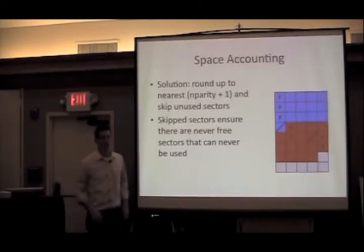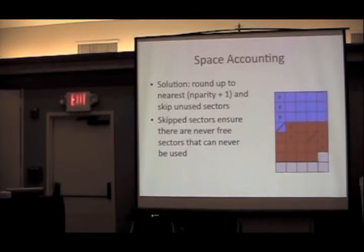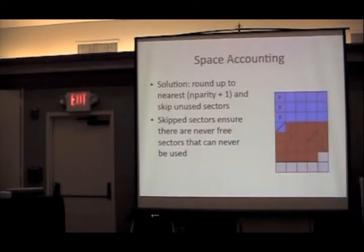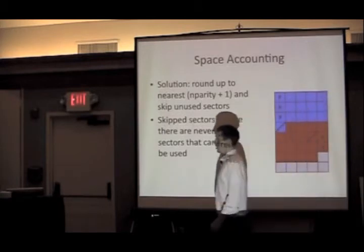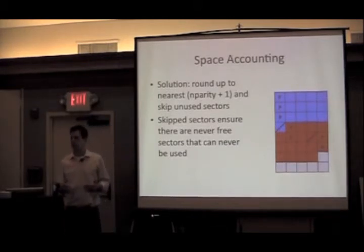We've gone through the same exercise before: deleting that yellow Tetris piece worth of data that was sitting right here. When we go to write our new section — this chunk — we include a skip sector. We had seven sectors that we're writing, we round that up to eight, so this chunk is now accounted for and belongs to that stripe. It bloats out the space we're using, but means we're never left with stray sectors we can never make use of. This is a subtlety of RAID-Z that turns out to be important.